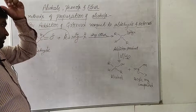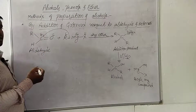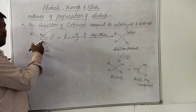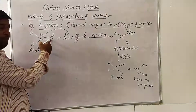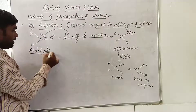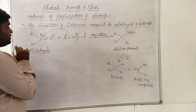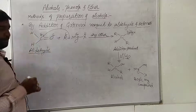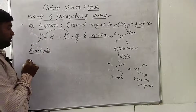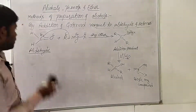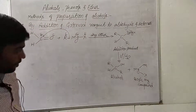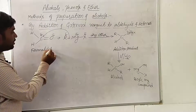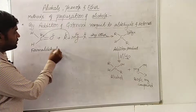Now let us consider one more example for aldehydes. The general formula for an aldehyde is RCHO. If we consider formaldehyde specifically — where instead of R we have hydrogen — this molecule is called formaldehyde. The formula is HCHO. So formaldehyde is our specific example aldehyde.